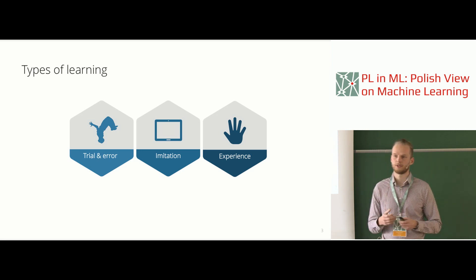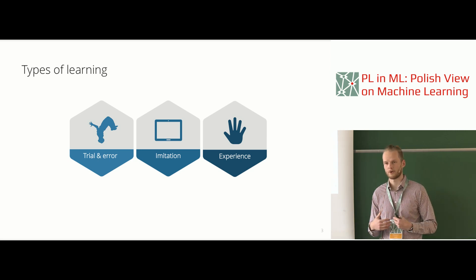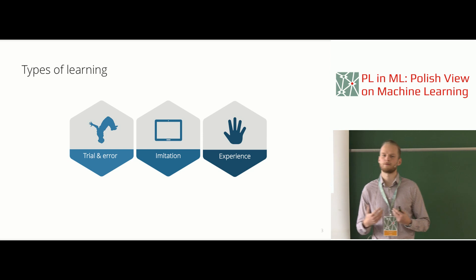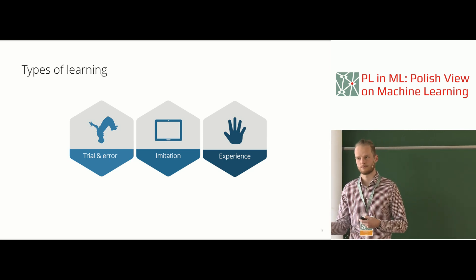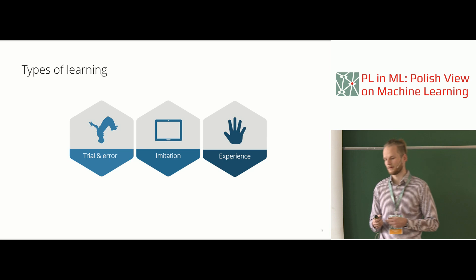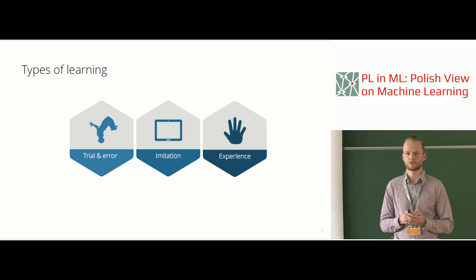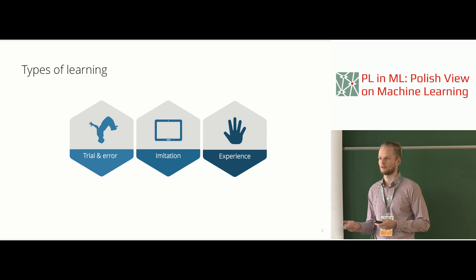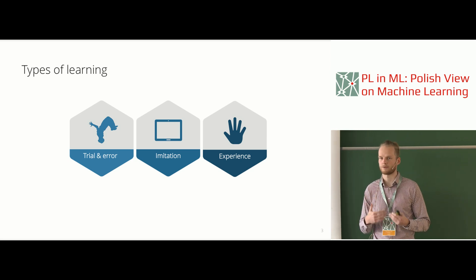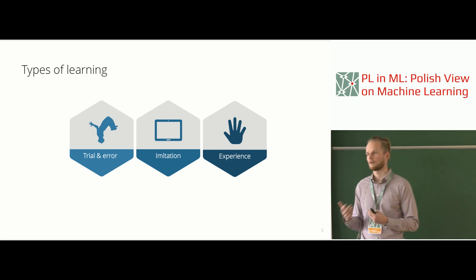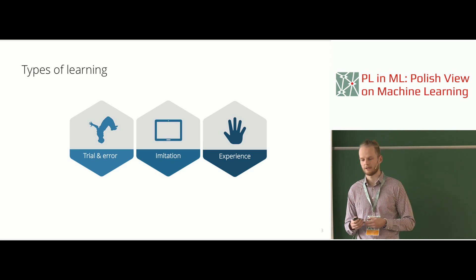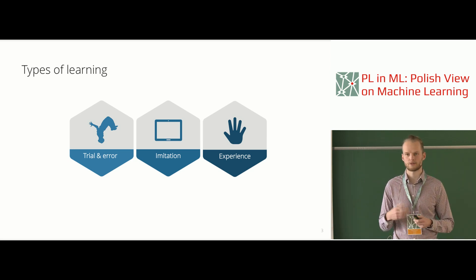The second type is imitation learning, where rather than learning on our own through trial and error, we observe other agents or are given demonstrations and try to extrapolate how to learn the same skill. The third type — learning from prior experience — hasn't been addressed as much. This is something humans do constantly: starting from something we already know and fine-tuning to find the right policy for something new. We don't do this enough in deep reinforcement learning, especially in robotics.